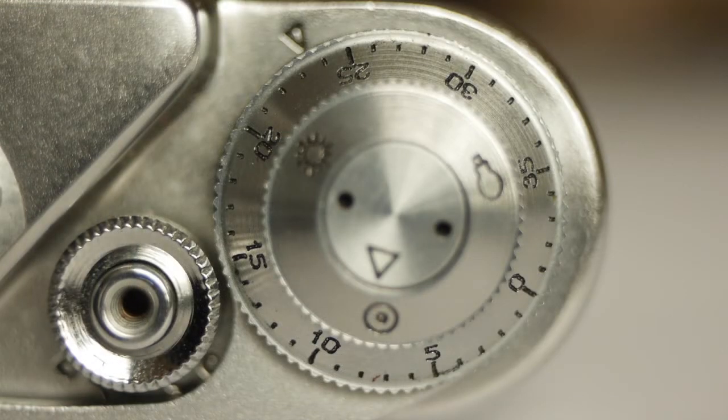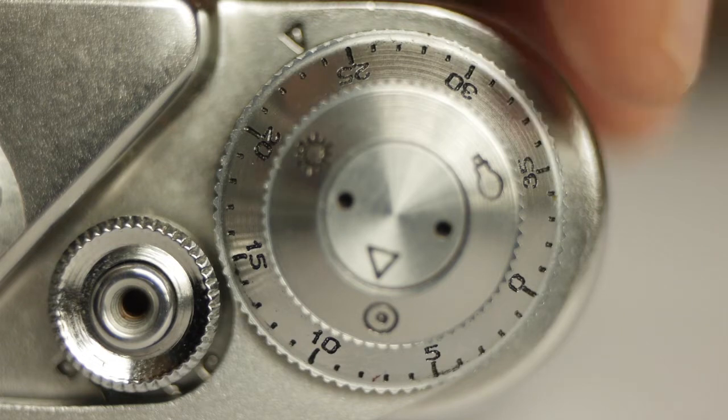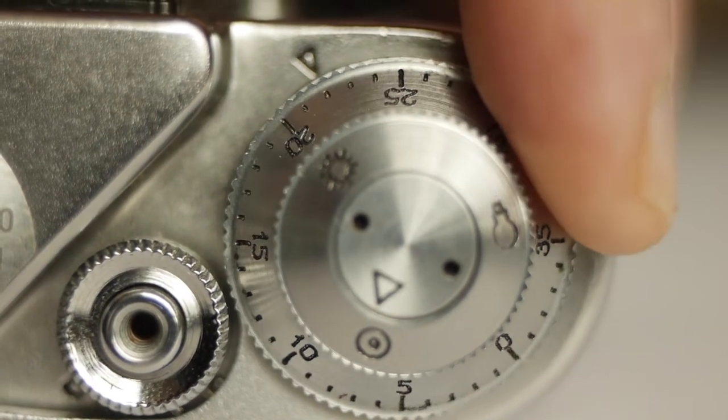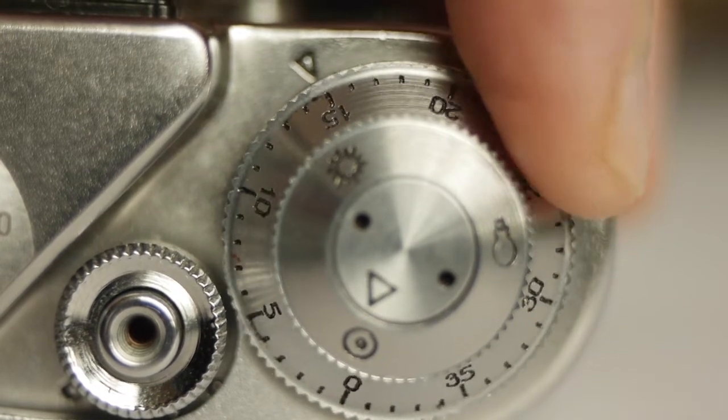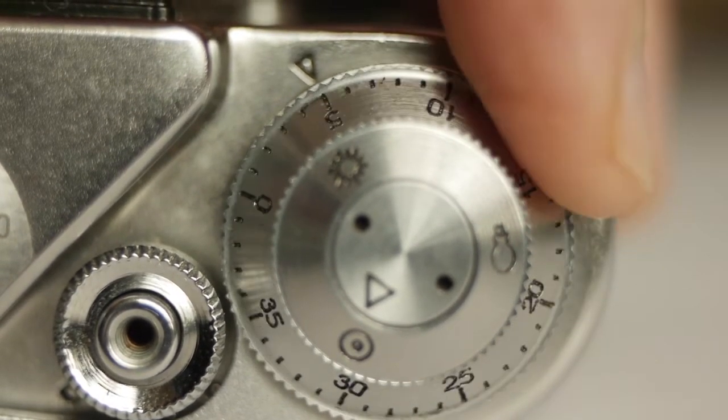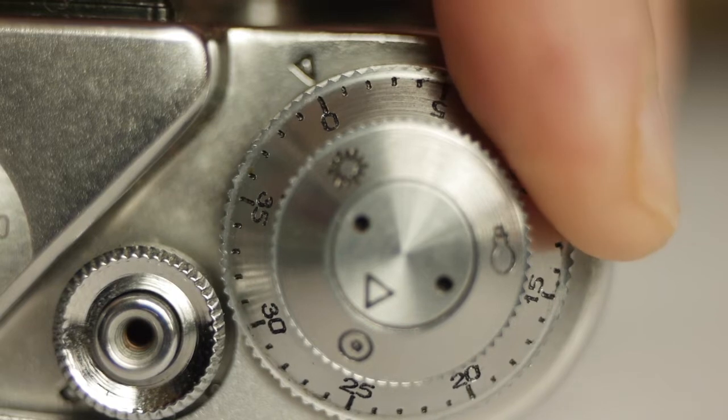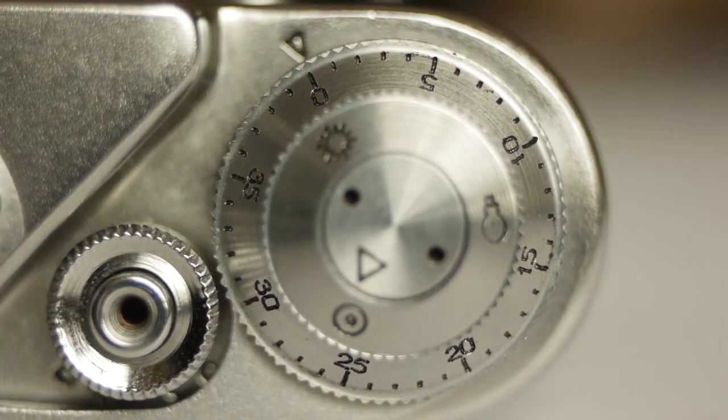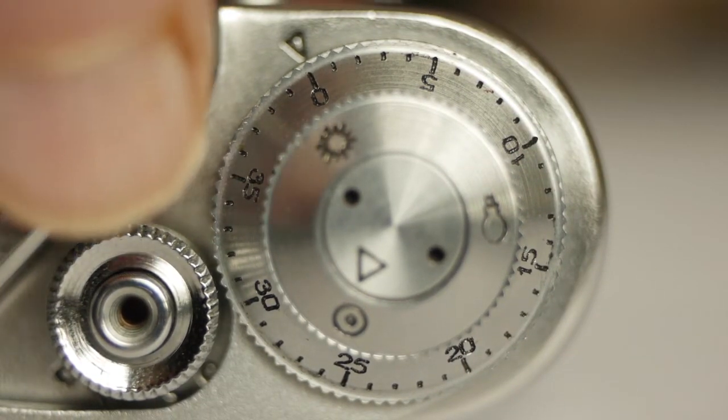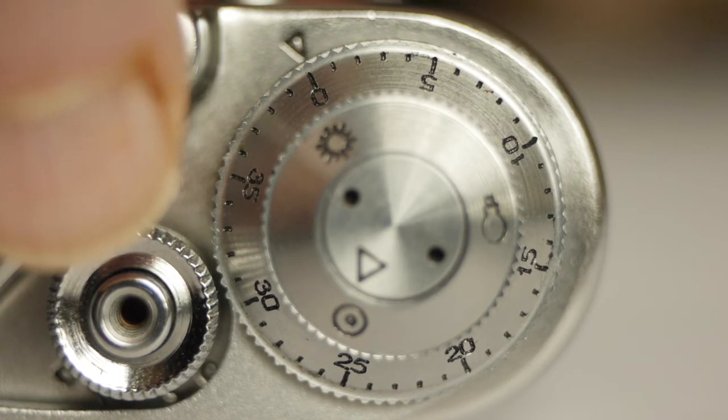On the right-hand side of the camera we've got the film counter. This turns by one notch every time you wind on, and after you've loaded a film it can be set back to zero just by simply turning.